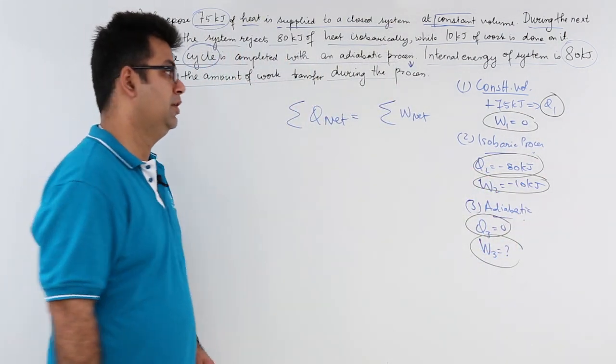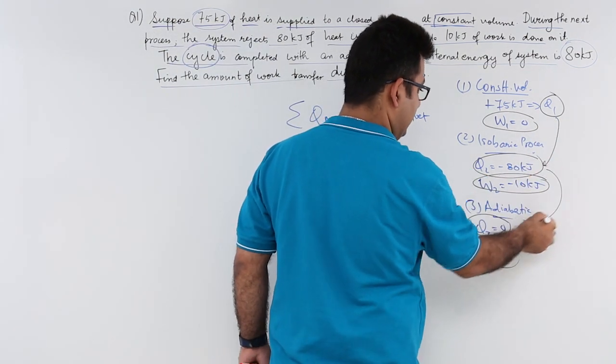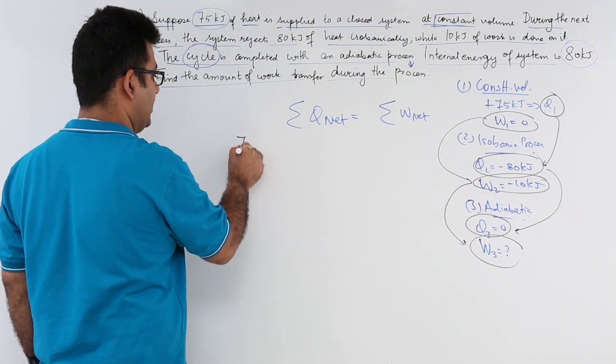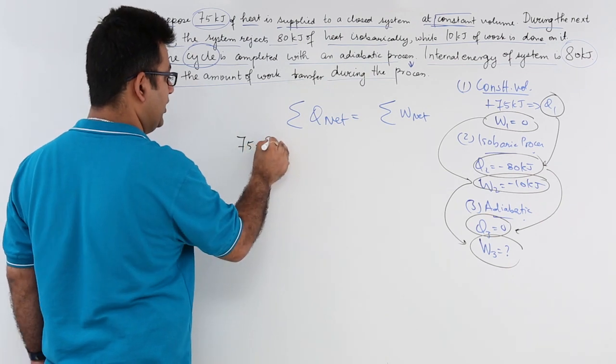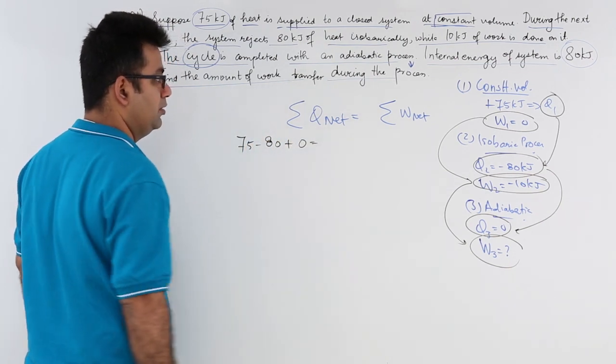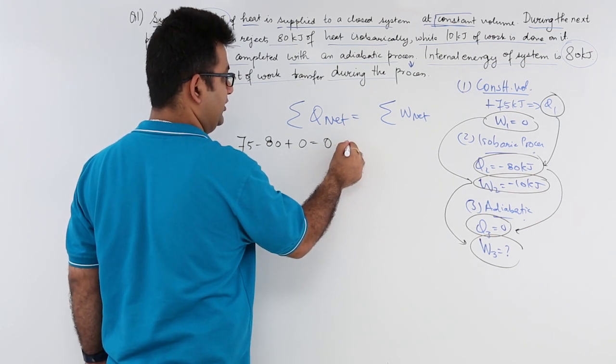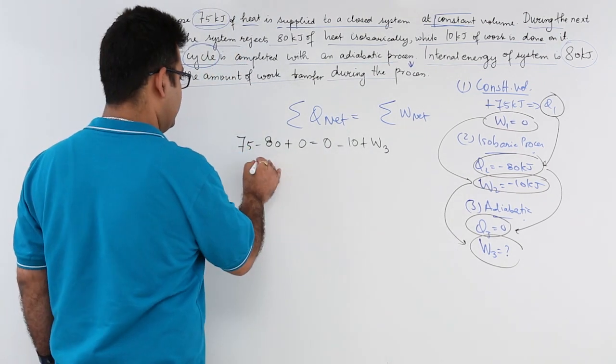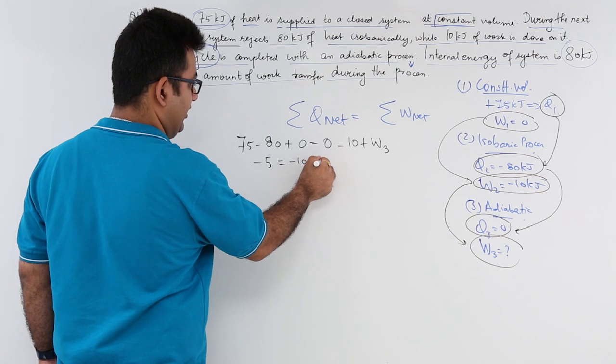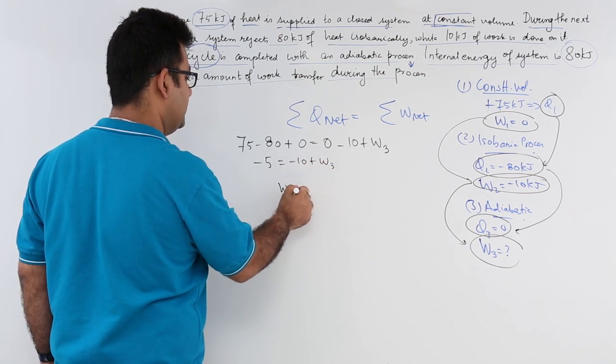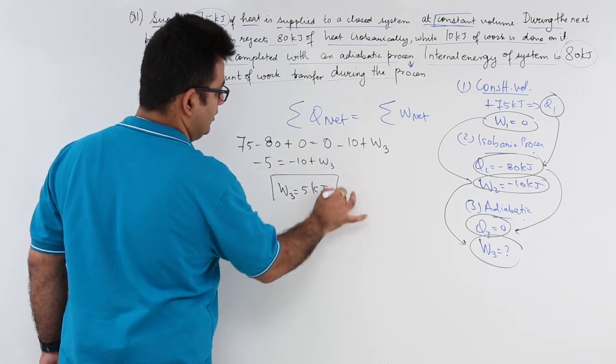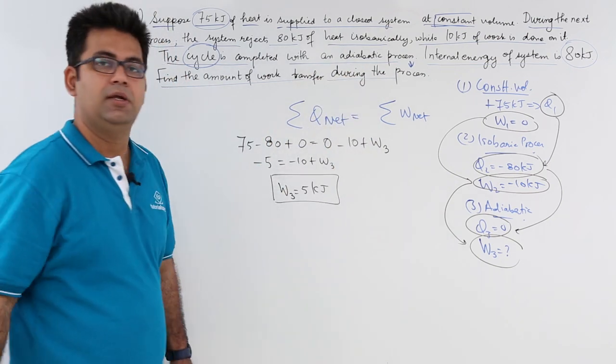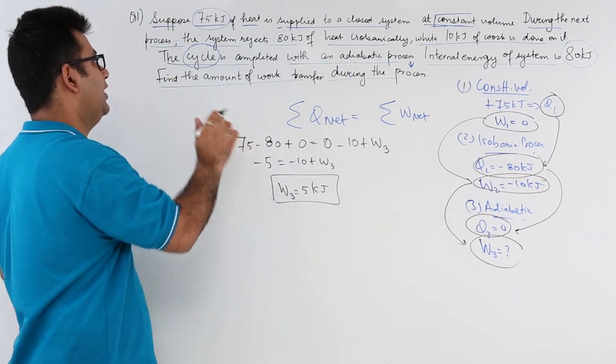We'll club Q1 plus Q2 equal to W1 plus W2 plus W3. We will have 75 minus 80 plus 0 equal to 0 minus 10 plus W3. So this is minus 5 equals minus 10 plus W3. So W3 is equal to plus 5 kilojoules. This is how easy it is.